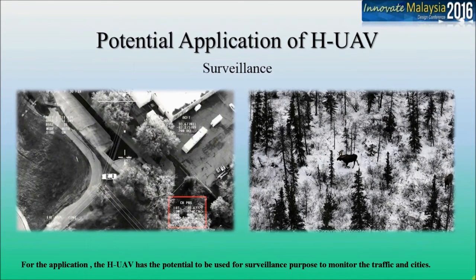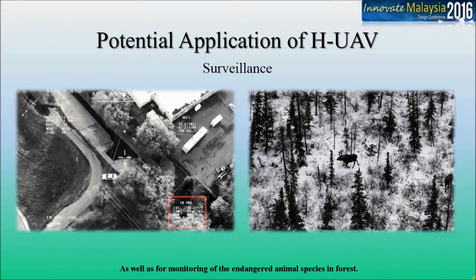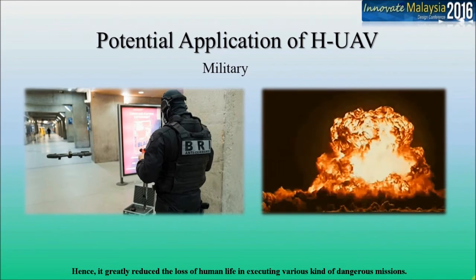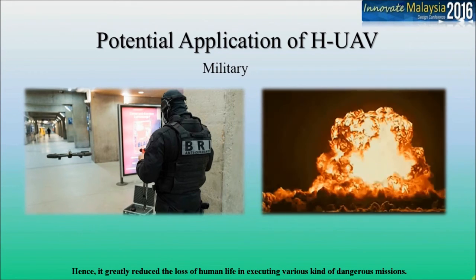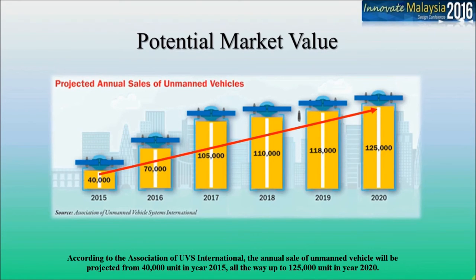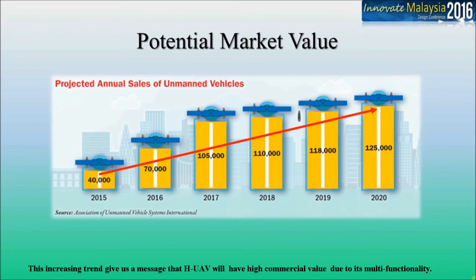For applications, the HUAV has the potential to be used for surveillance purposes to monitor traffic in cities, as well as for monitoring endangered animal species and forests. In terms of military purposes, HUAV can replace human beings for reconnaissance in high-risk places, greatly reducing the loss of human life in dangerous missions. By looking at HUAV's applications, we can clearly see it has very high potential in terms of market growth. According to the Association of UAS International, annual sales of unmanned vehicles are projected from 40,000 units in 2015 all the way up to 125,000 units in 2020, indicating HUAV will have high commercial value due to its multi-functionality.